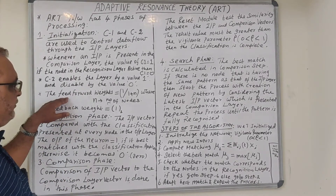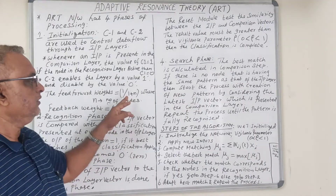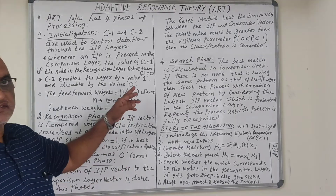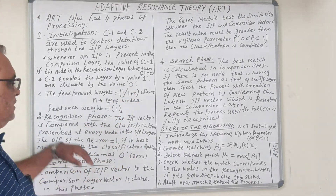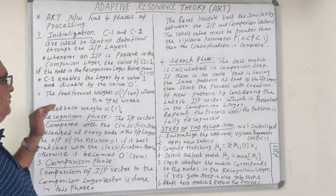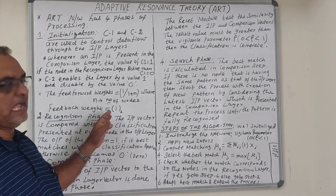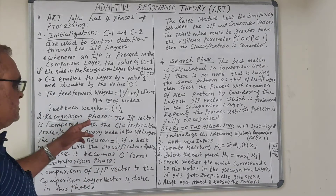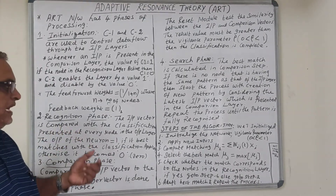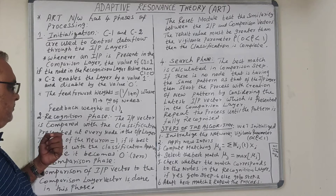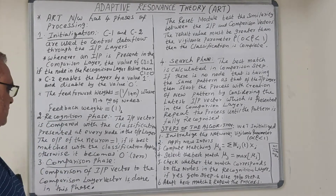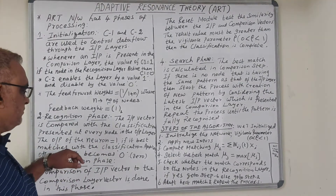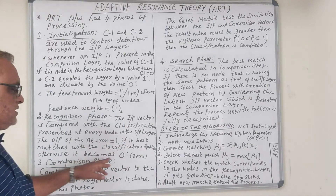Other parameters like the feed-forward weights are initialized using the formula 1 divided by (1 + n), where n represents the number of nodes. Other feedback weights are initialized as binary value 1. The second phase is the recognition phase, where the input vector is compared with the classification at every node in the output layer. The neuron output equals 1 for the best match, otherwise 0.